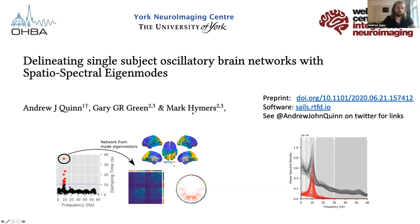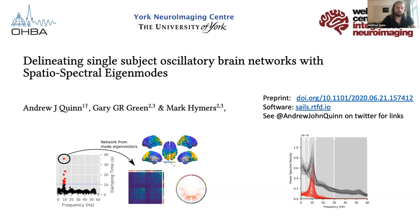Thank you to Catherine and Arena for some excellent talks earlier in this session. I'm going to be talking about oscillations as well, but in the context of brain networks as opposed to single burst events. Often we might do an analysis looking at what's happening in a brain region or a set of brain regions, as Catherine and Arena have suggested. But here we're going to be looking at how different regions might interact over an entire brain.